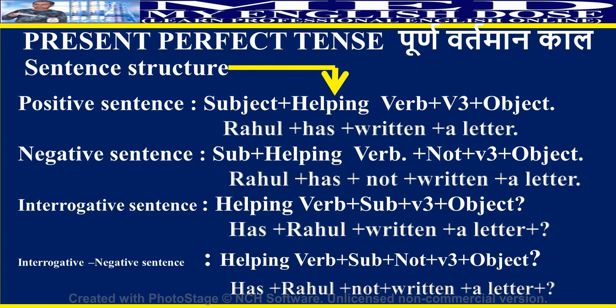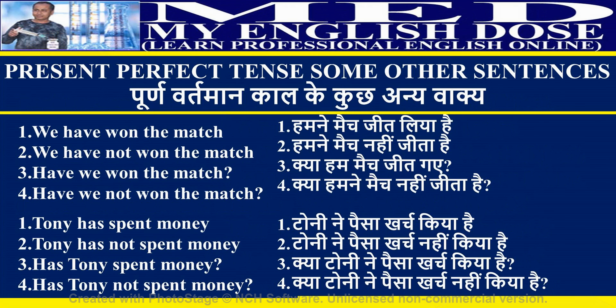Examples of present perfect tense: Rahul has written a letter (positive). Rahul has not written a letter (negative). Has Rahul written a letter? (interrogative). Has Rahul not written a letter? (interrogative negative). We have won the match. We have not won the match. Have we won the match? Have we not won the match? Tony has spent money. Tony has not spent money. Has Tony spent money? Has Tony not spent money?